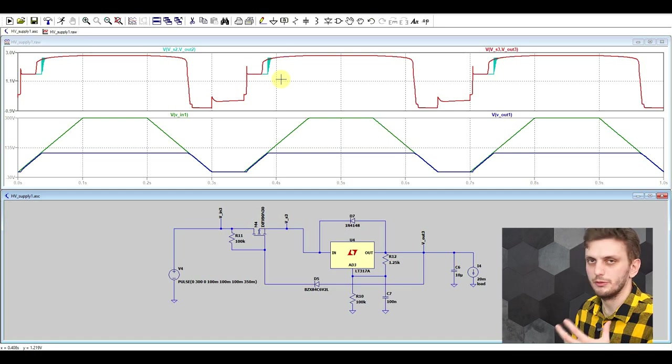But it's also important to mention that if we add this sort of capacitor, we should also add a diode between the adjust pin and the output pin, just so that this capacitor doesn't stay charged and then discharge through the 317. So again, a protection element.